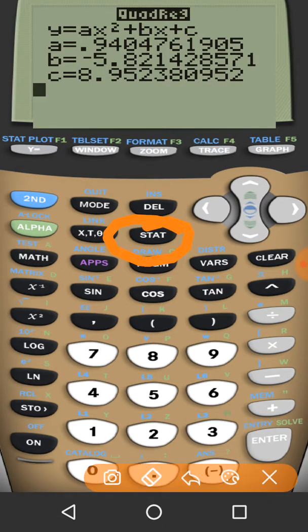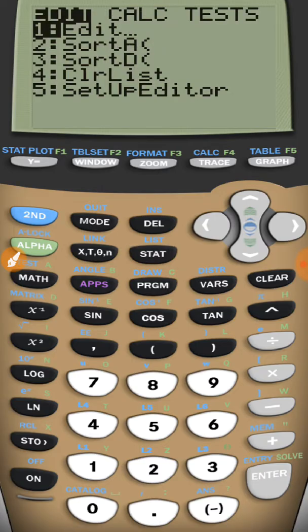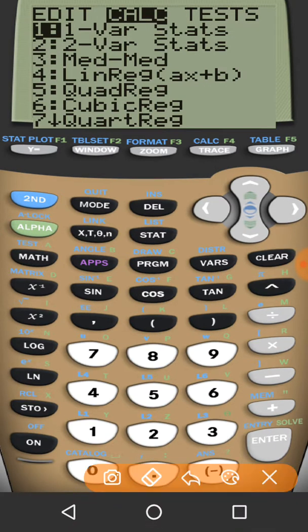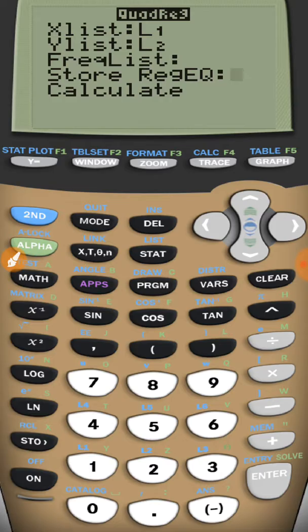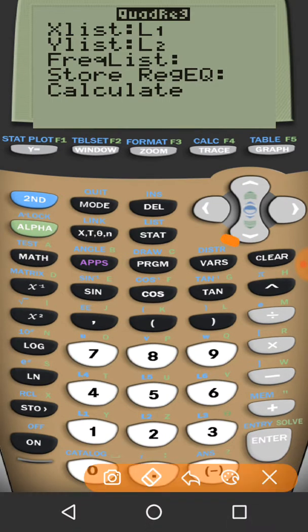And I'm going to press Enter. You can also just press the number five. Here, I do want to use these lists, L1 and L2, and I don't really care about this other stuff. So I'm going to simply come down here and calculate.